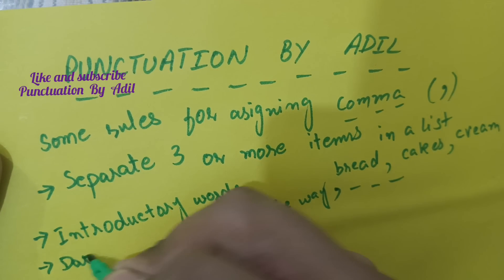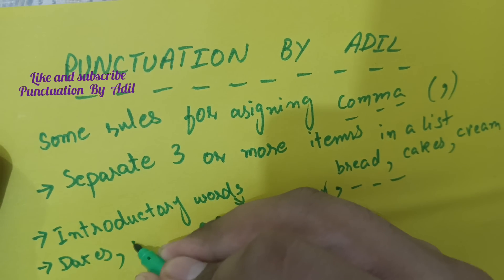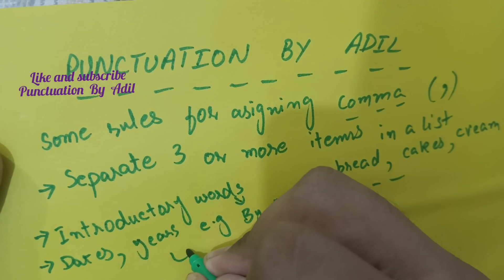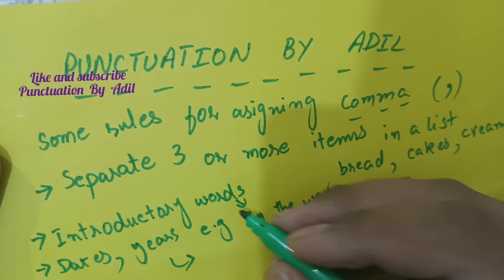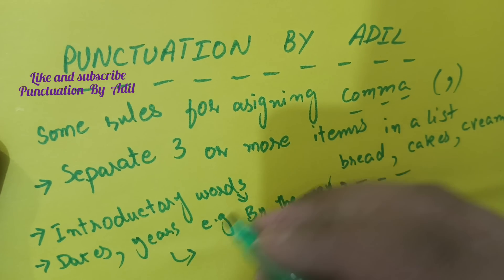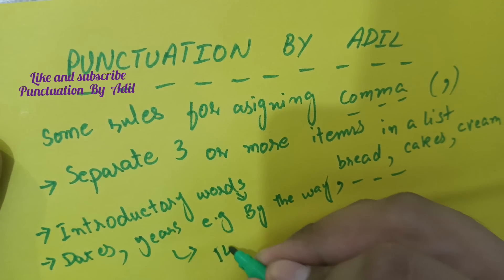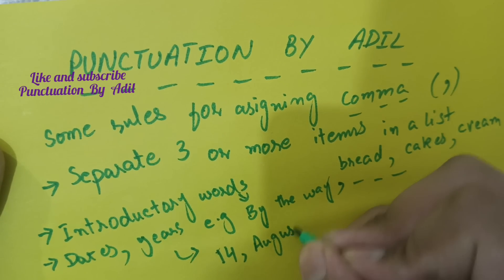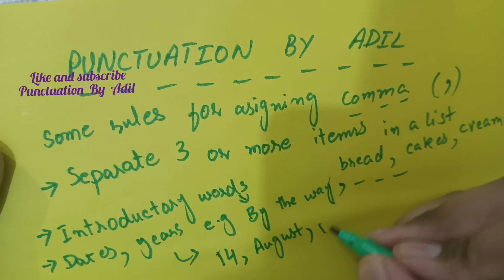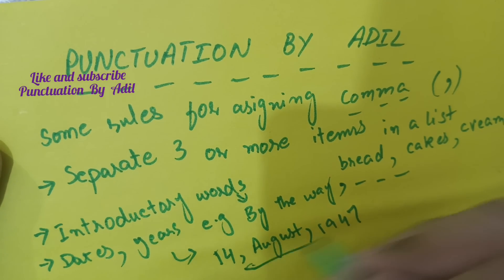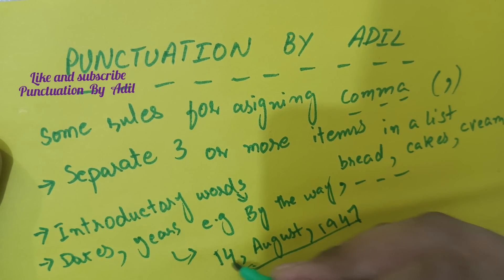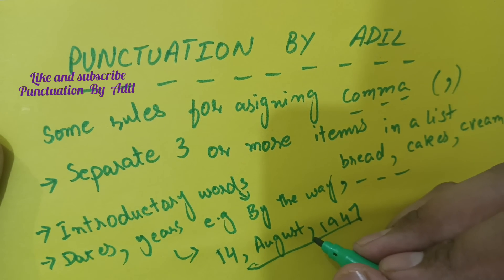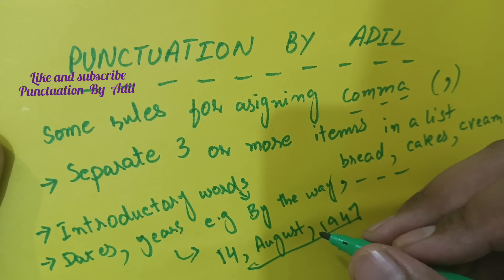A comma is also used in dates and years. For example, if I write the date when Pakistan was formed: 14, August, 1947. As you can see, I have placed a comma after the date 14 and before the year 1947.